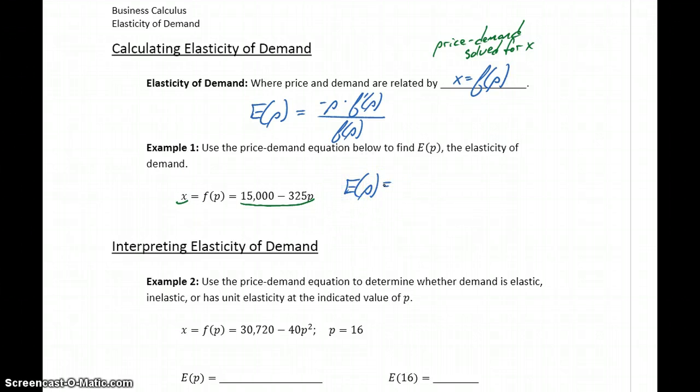To get this elasticity function E of P, we would take negative P times the derivative of our price-demand function. If we had a more complex function, we could turn to Wolfram Alpha for this, but this one is pretty easy to calculate. This will be negative 325 divided by 15,000 minus 325P.